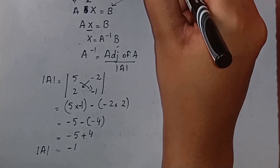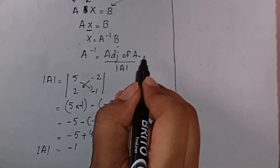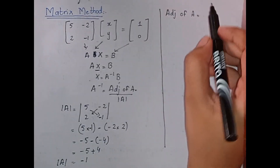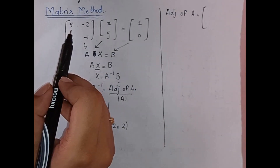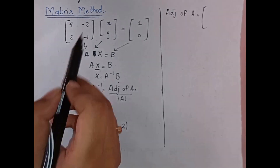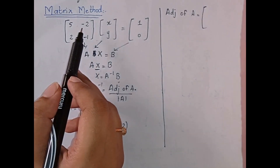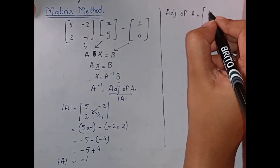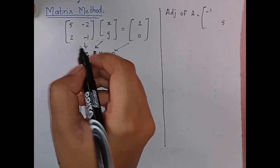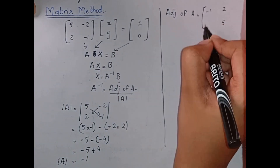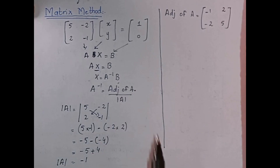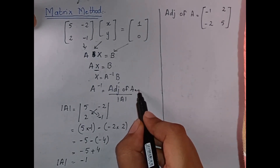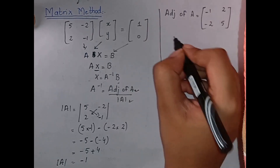Now we find the adjoint of A. To find the adjoint of a 2×2 matrix, we swap the positions of the two diagonal elements — so 5 and 1 swap — and we change the signs of the off-diagonal elements: 2 and -2 become -2 and 2. So the adjoint of A is: 1, -2, 2, -5. If you have any confusion, you can ask me in the comment box.